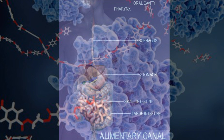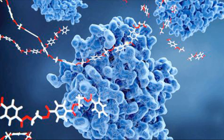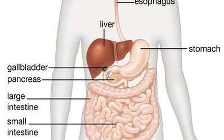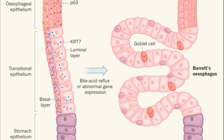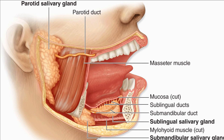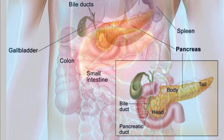Along the journey, chemical substances called enzymes are added to the food for its quick breakdown. Enzymes are produced from organs called glands. The different parts of the alimentary canal and the digestive system include mouth, esophagus, stomach, small intestine and large intestine, while the associated glands include salivary glands, liver and pancreas.